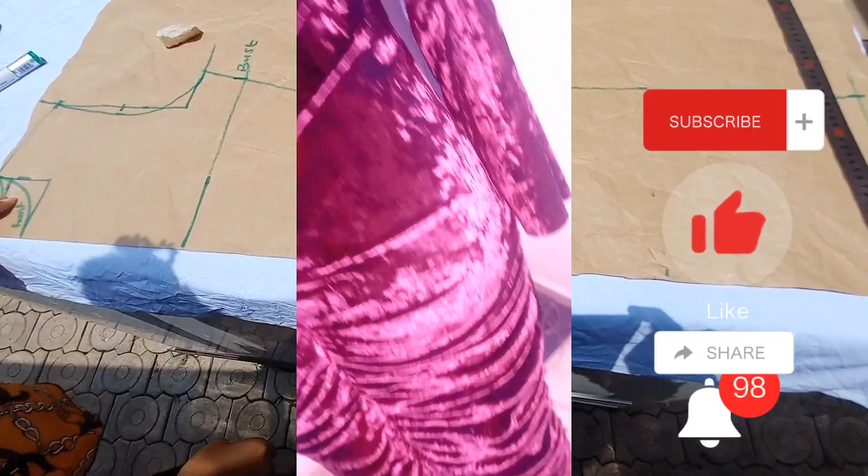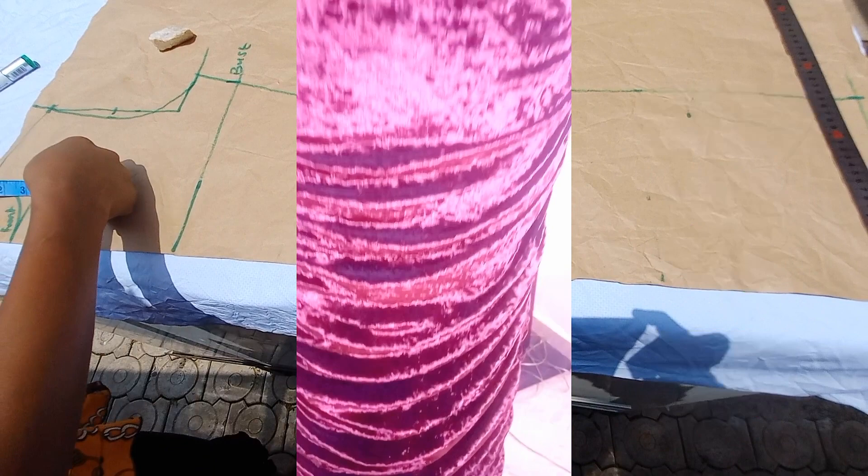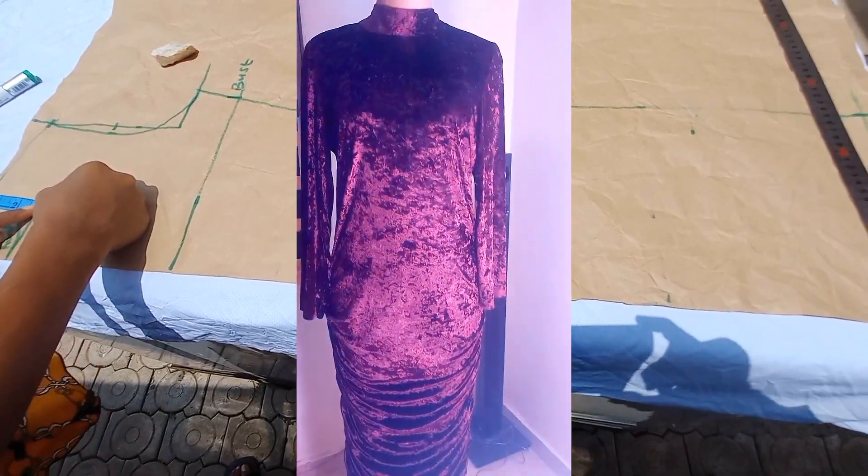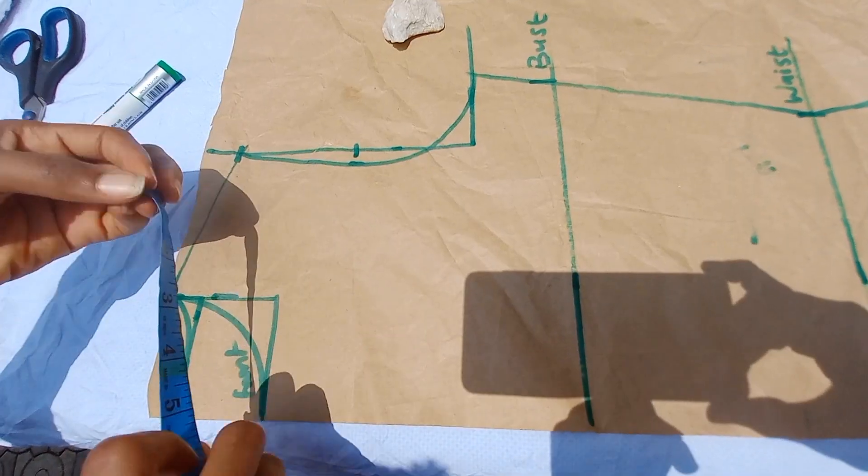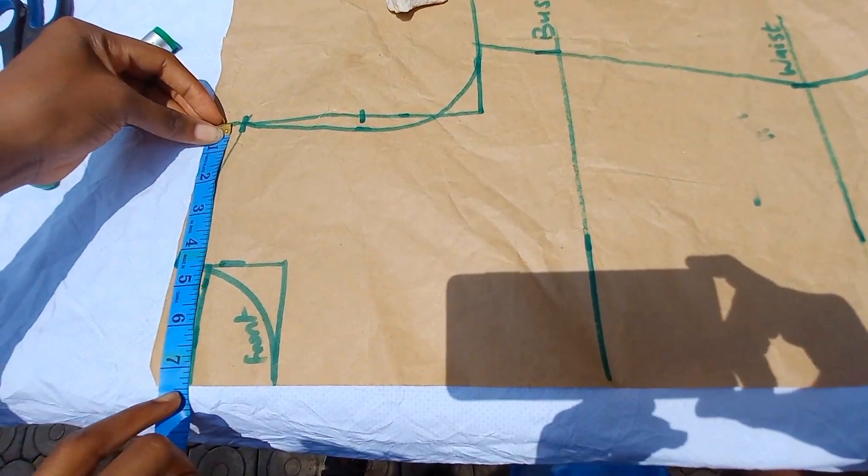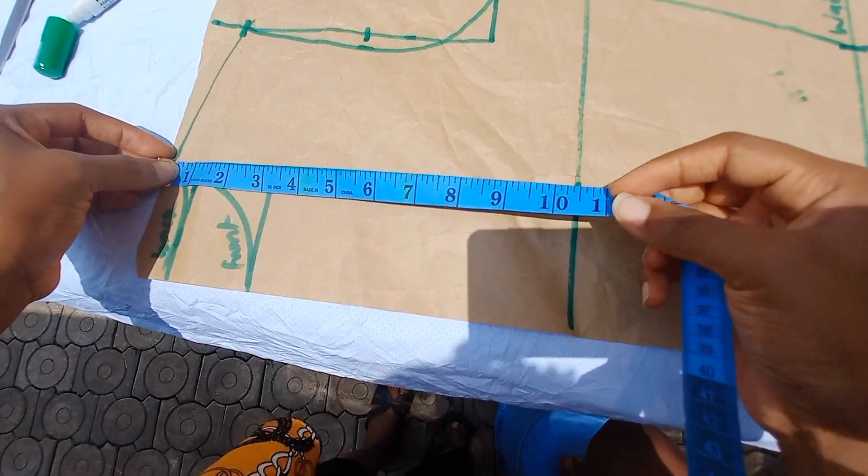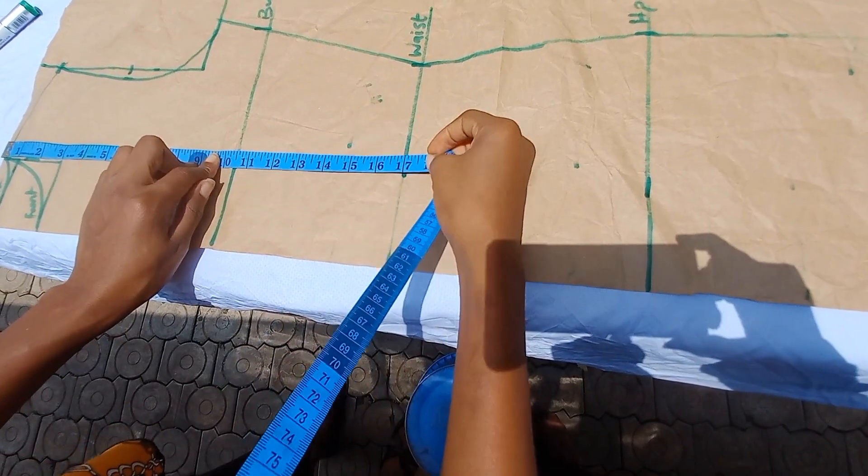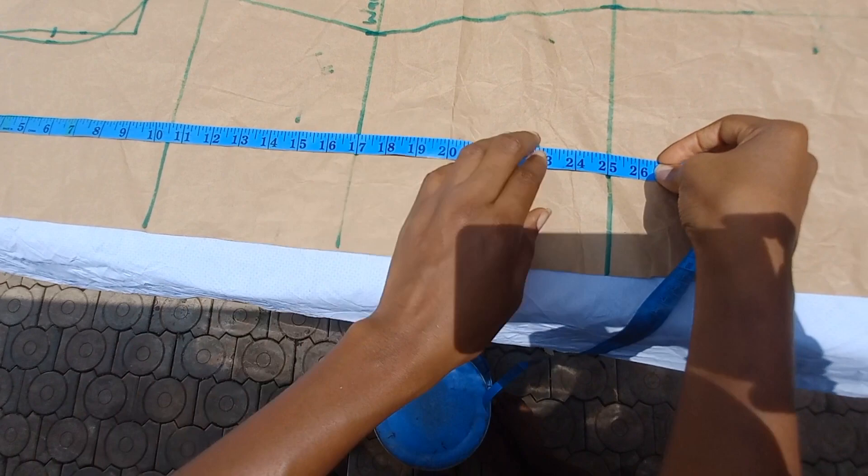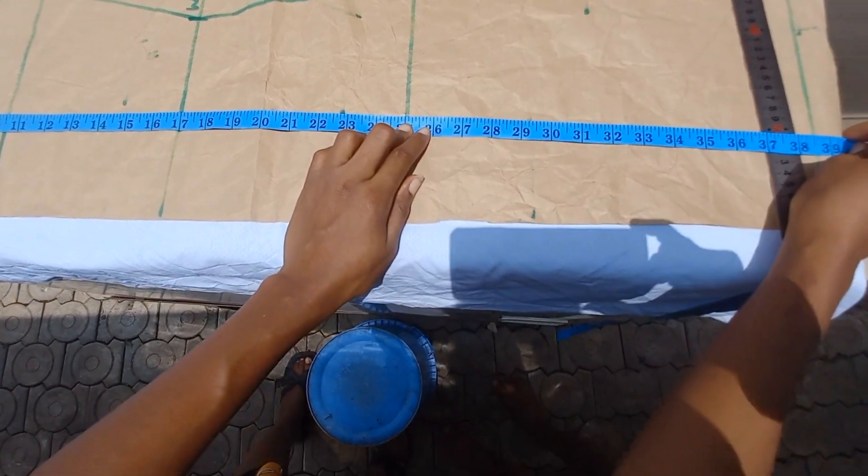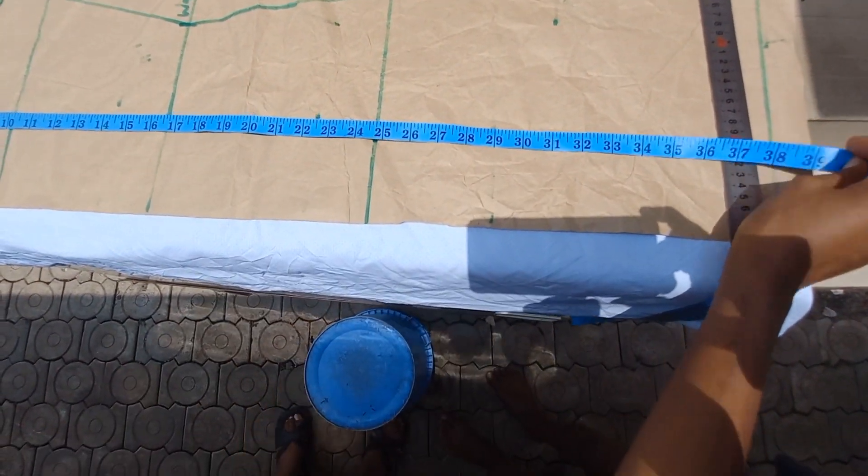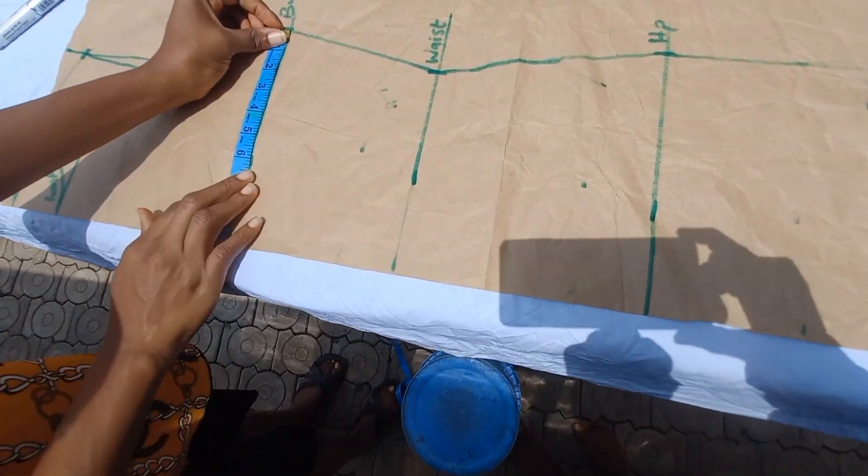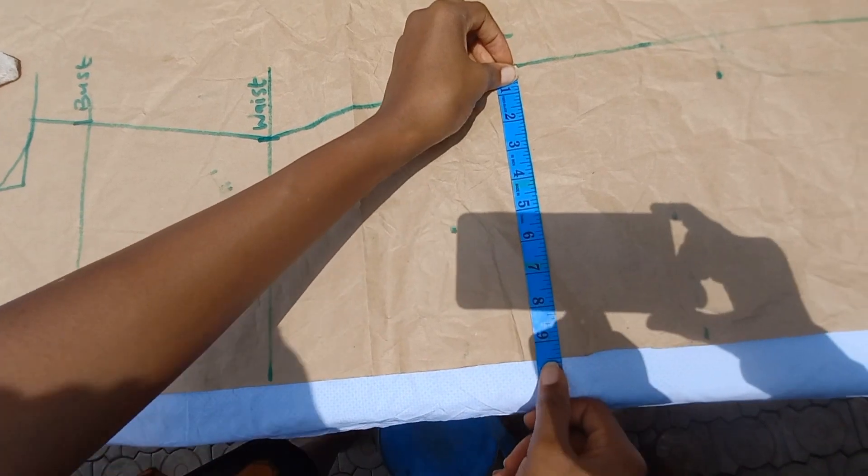We will be starting off this video with our front block, our basic dartless block. As you can see, this block has no dart. I'm using the basic neckline. I've marked out the points: the bust, the waist, the hip, and the gown length. I'm a size 6, and in this tutorial I'll be working on my measurements. I'm going to place my bust measurements, my waist measurement, my hip measurements, all divided by four, on this paper. As we all know, there are two types of designers.